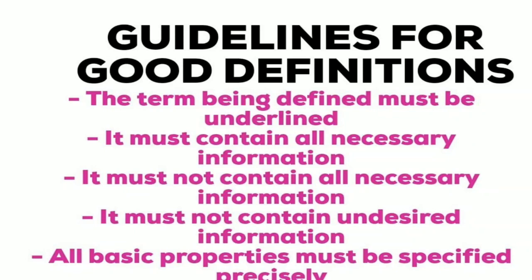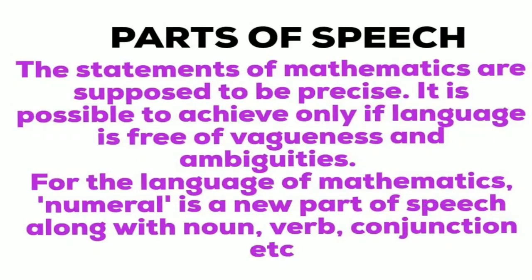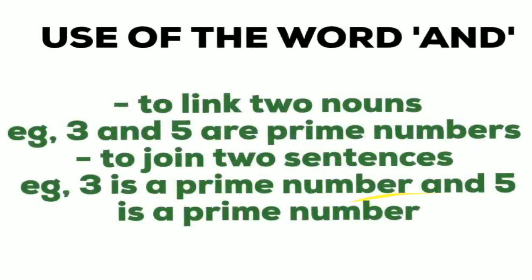Next is language and grammar of mathematics. Parts of speech appear in mathematical language as well. The statements of mathematics are supposed to be precise, and this is possible only if the language is free from vagueness and ambiguities. For the language of mathematics, 'numeral' is a new part of speech alongside noun, verb, and conjunction.